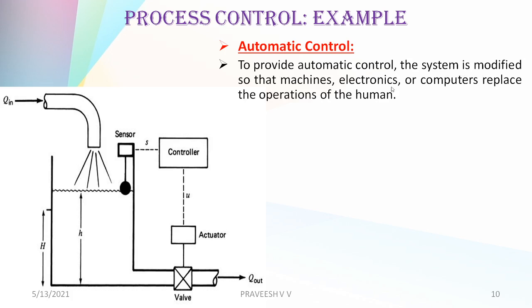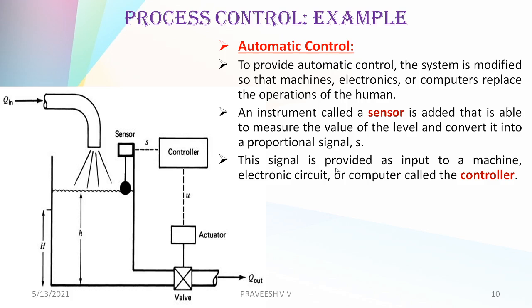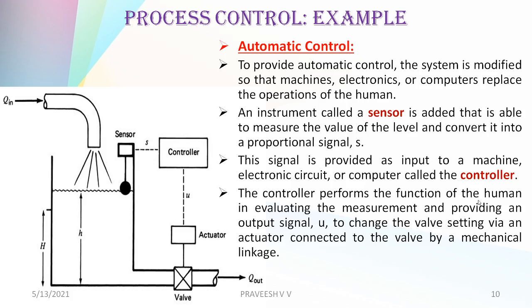To provide automatic control, the system is modified so that machines, electronics, or computers replace the human operator. A sensor is added that is able to measure the value of the level and convert it into a proportional signal S. This signal is provided as an input to a controller — a machine, electronic circuit, or computer. The controller receives the signal S, which gives information about the actual level, and performs the function of the human.